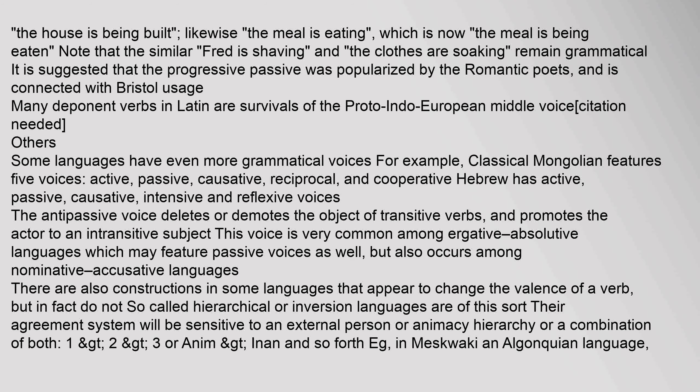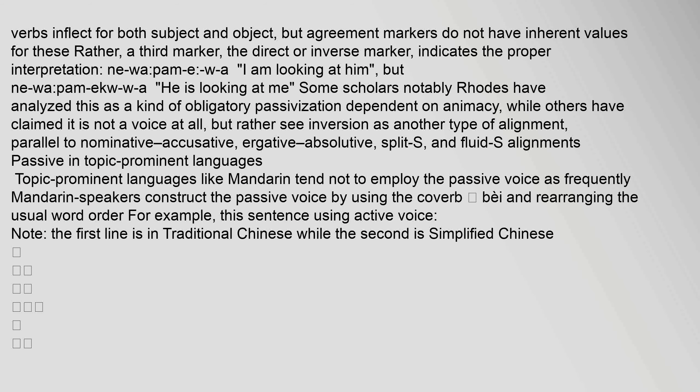There are also constructions in some languages that appear to change the valence of a verb but in fact do not. So-called hierarchical or inversion languages are of this sort — their agreement system is sensitive to an external person or animacy hierarchy. Verbs inflect for both subject and object, but a third marker — the direct or inverse marker — indicates the proper interpretation. Some scholars have analyzed this as a kind of obligatory passivization dependent on animacy, while others see inversion as another type of alignment.